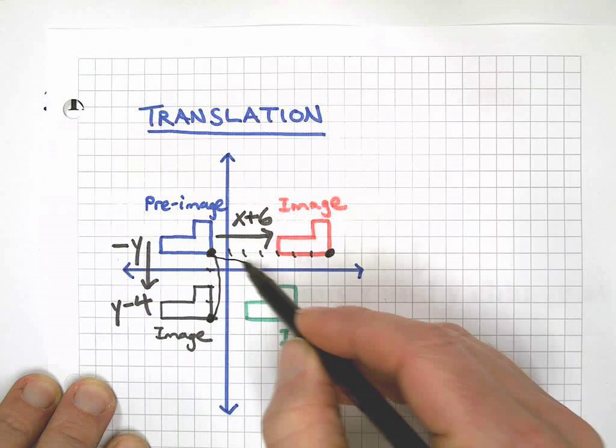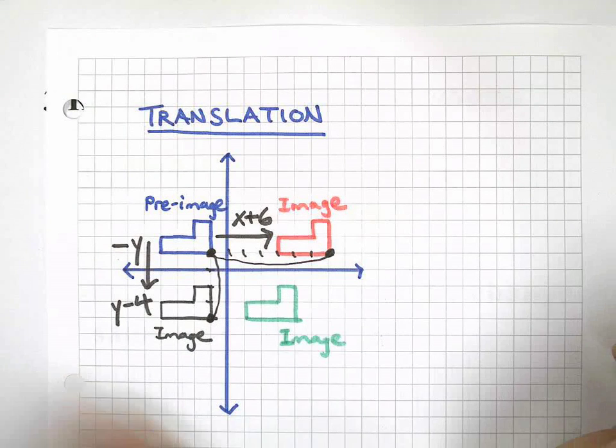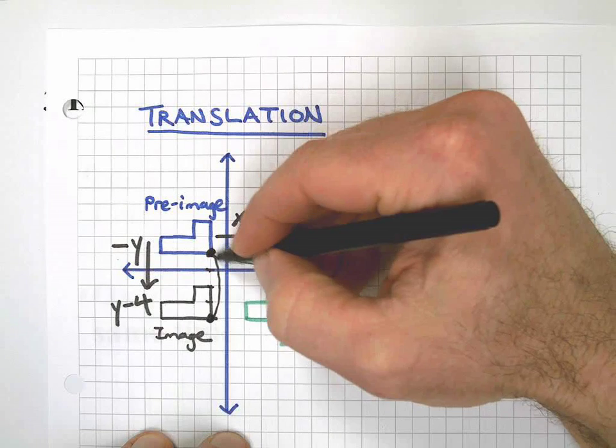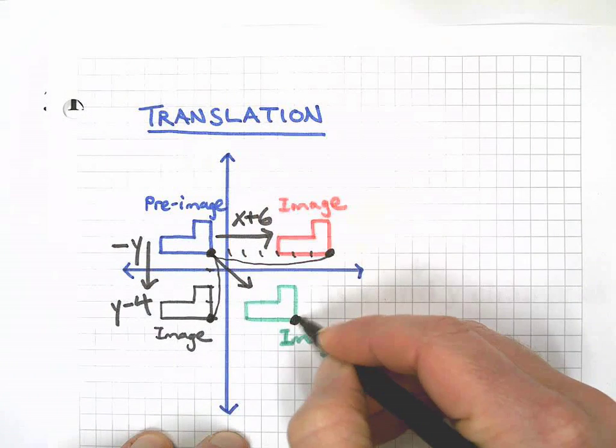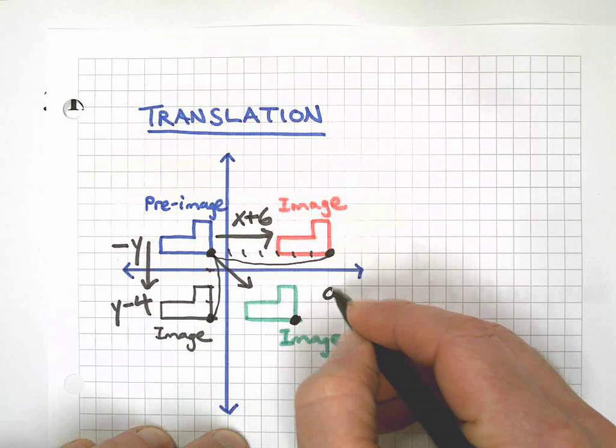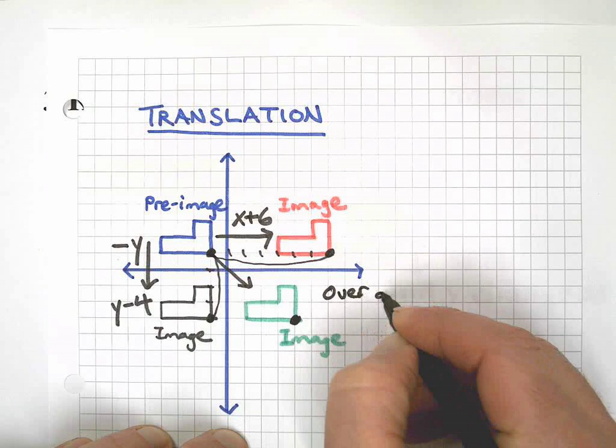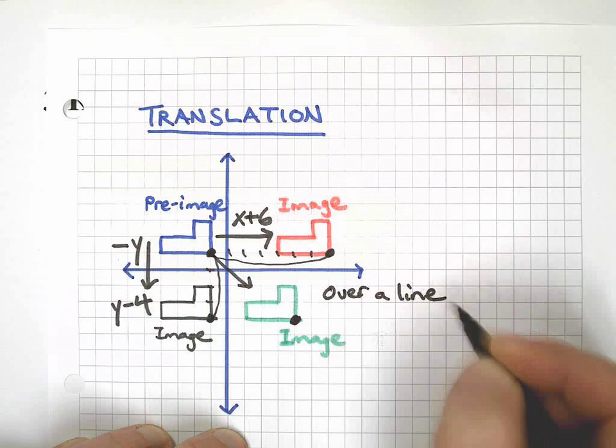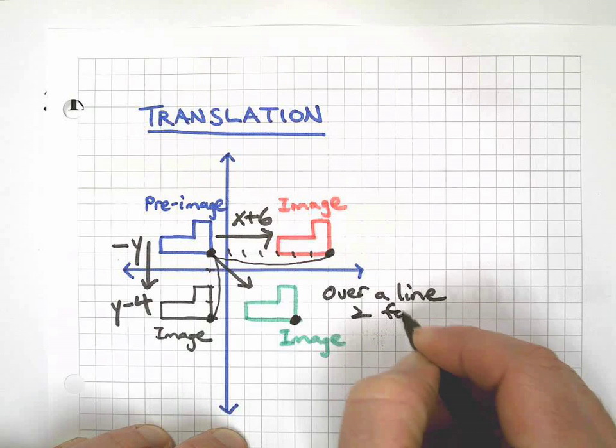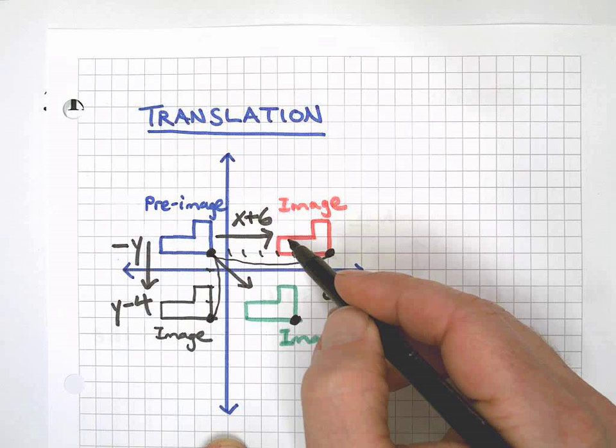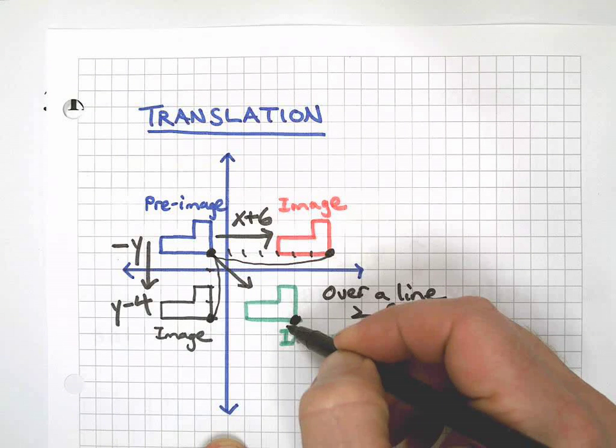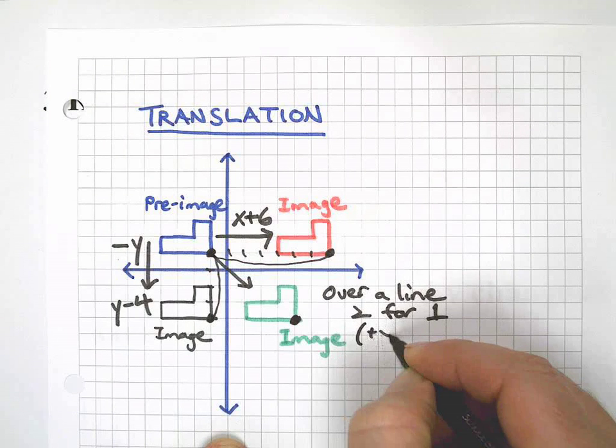And finally, there's a third kind if we just go this way. And this is called over a line. That's simply a two-for-one deal. You can imagine to get here I had to go plus x and minus y to get here, right?